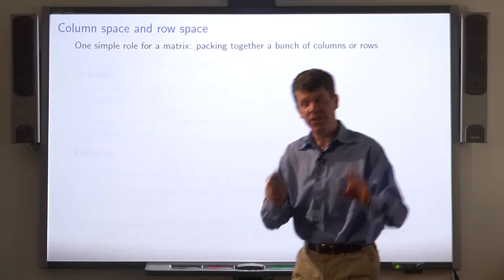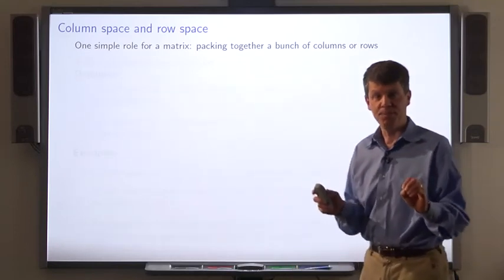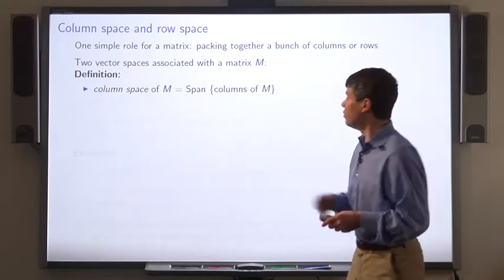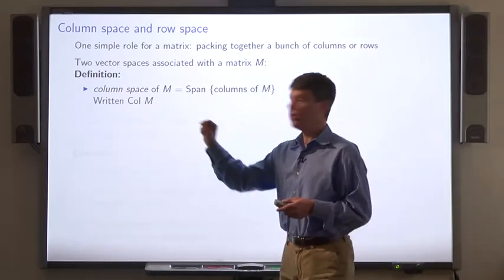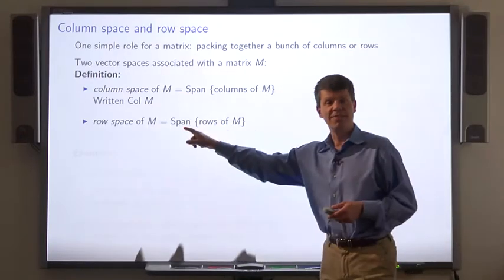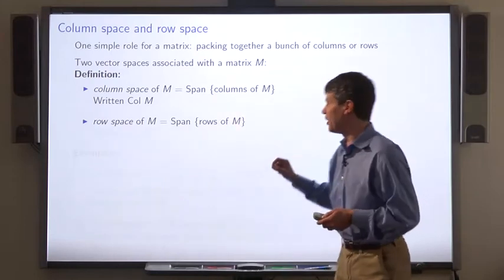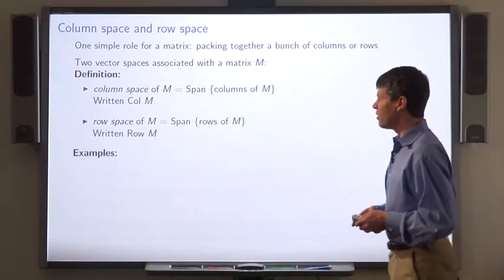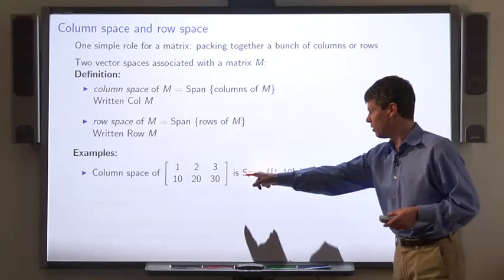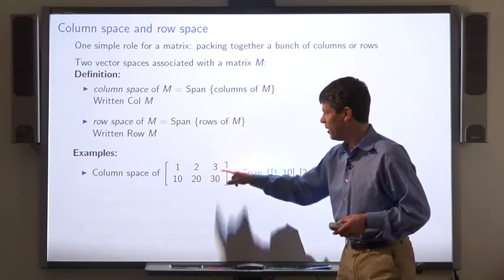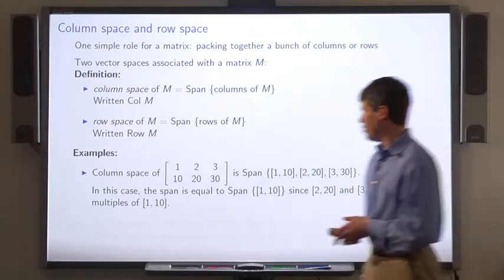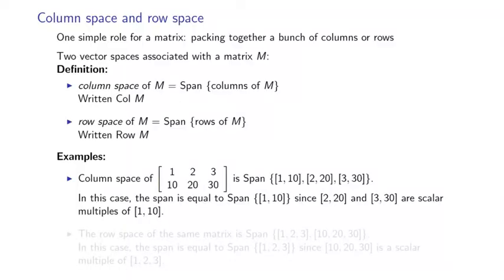One simple role for matrices is as a way of packing together a bunch of rows or a bunch of columns. We define two vector spaces for each matrix M. One is the column space, which is the span of the columns of that matrix M. The other is, and it's written col M. The other is the row space of M, which is just the span of the rows of M. And that's written row of M. So for example, the column space of this matrix is the span of its columns. The first column is 1, 1, 0, second column is 2, 2, 0, third column is 3, 3, 0. Now in this case, the span is just equal to the span of the first column, 1, 1, 0, since the other two are scalar multiples of that.